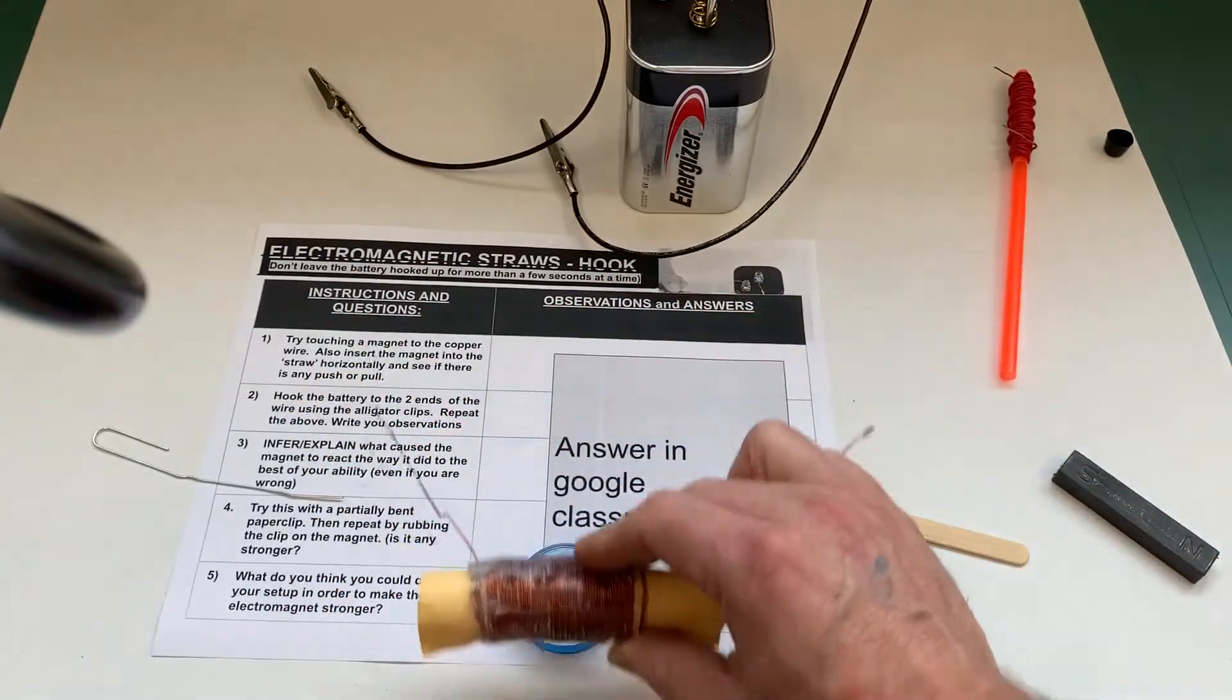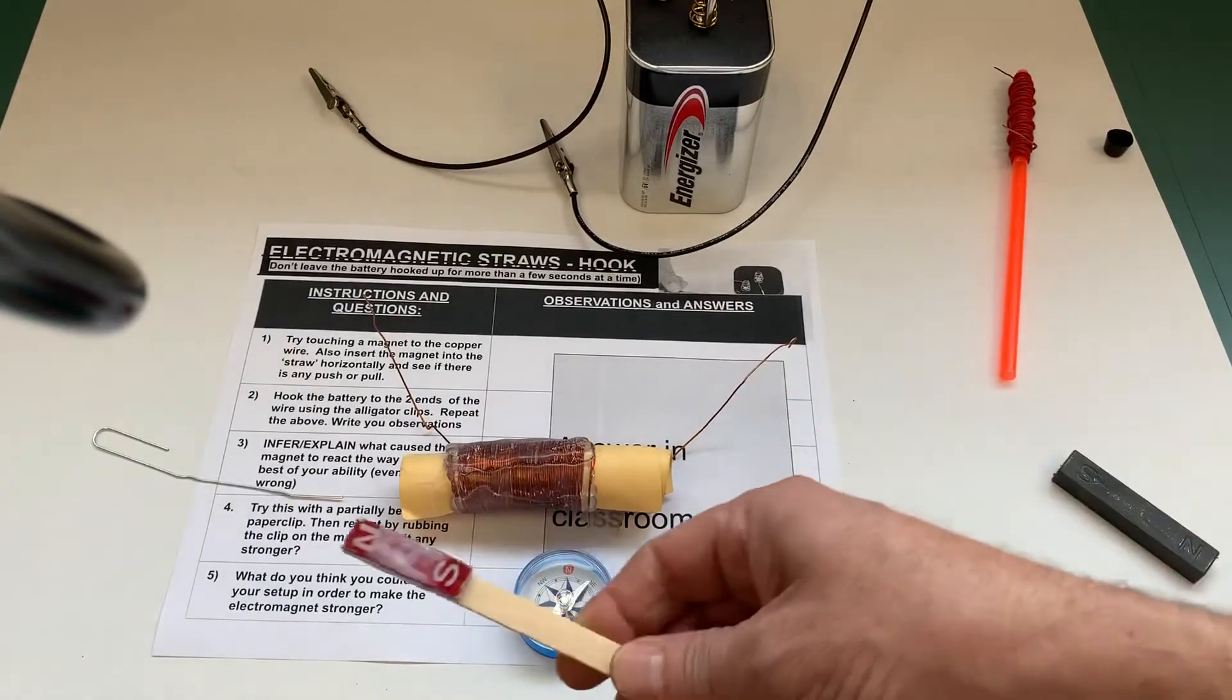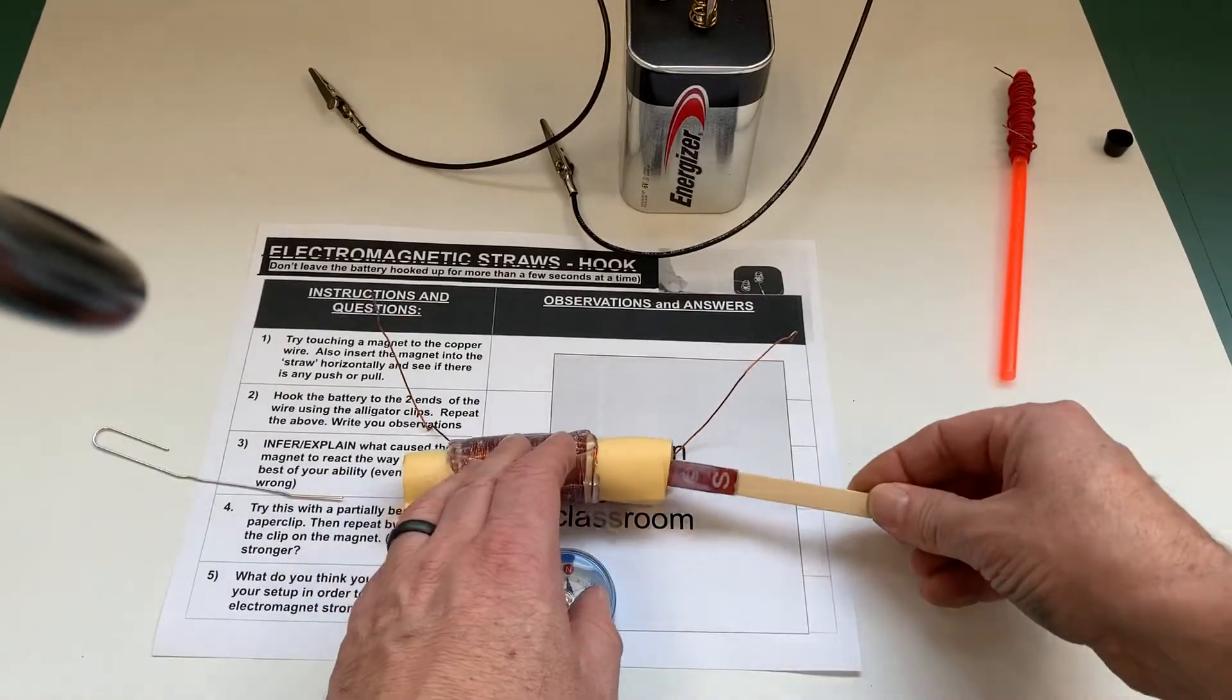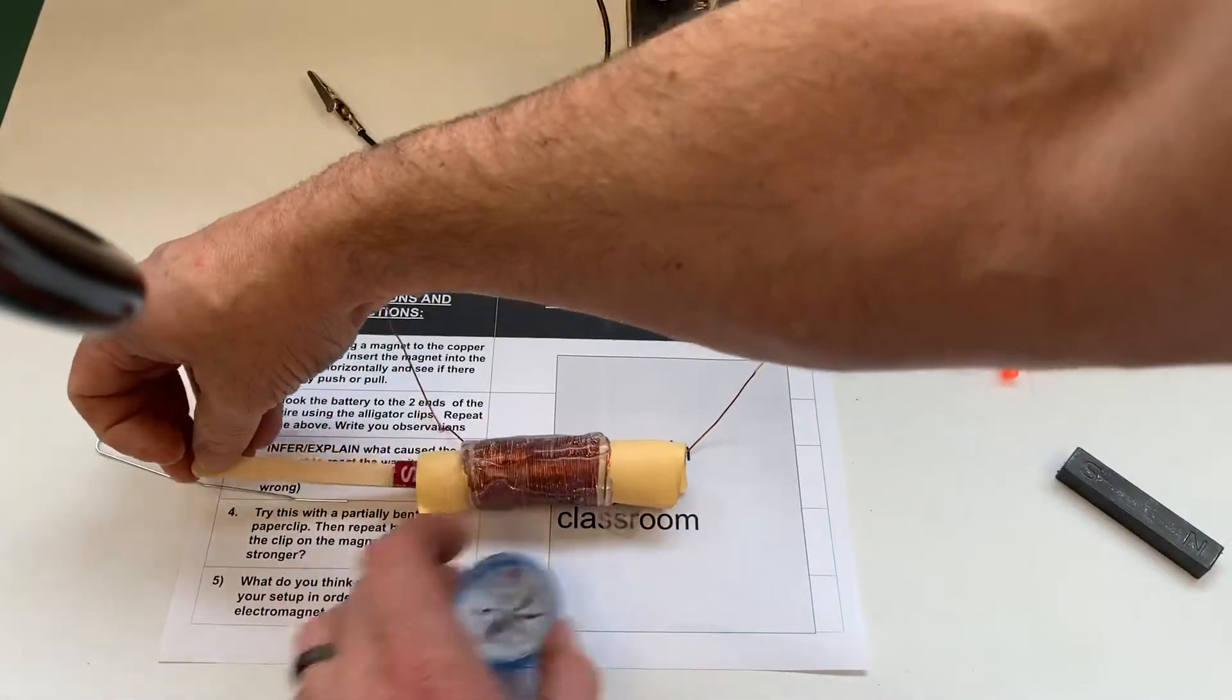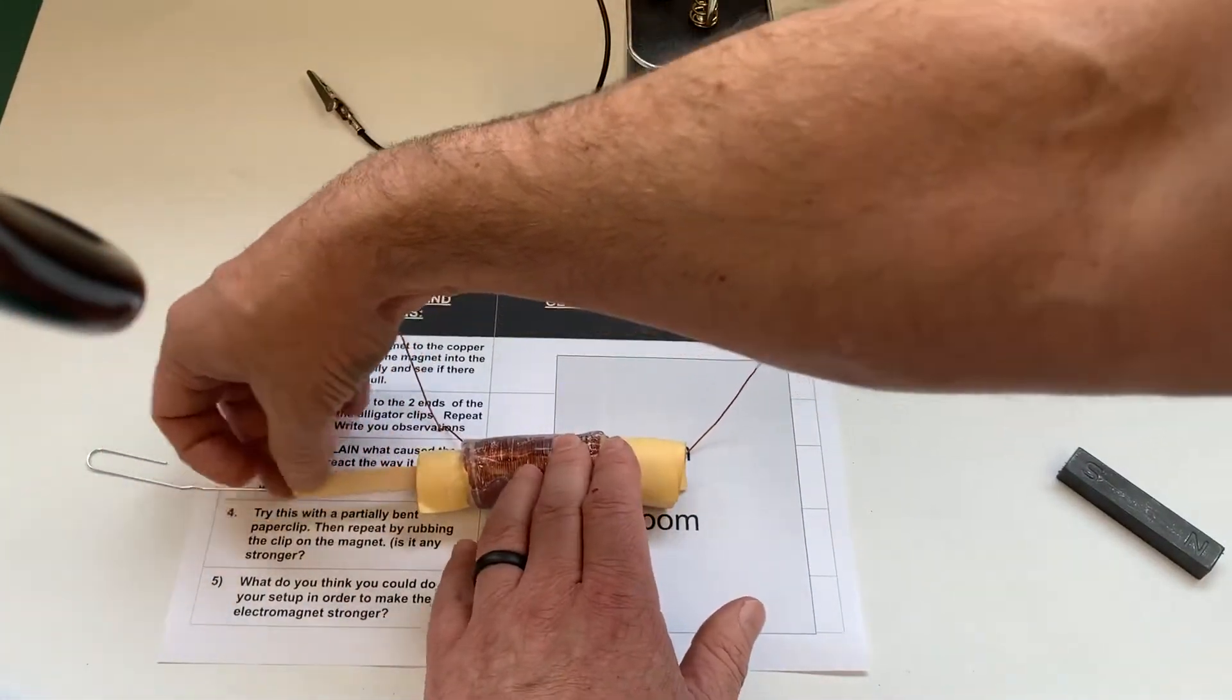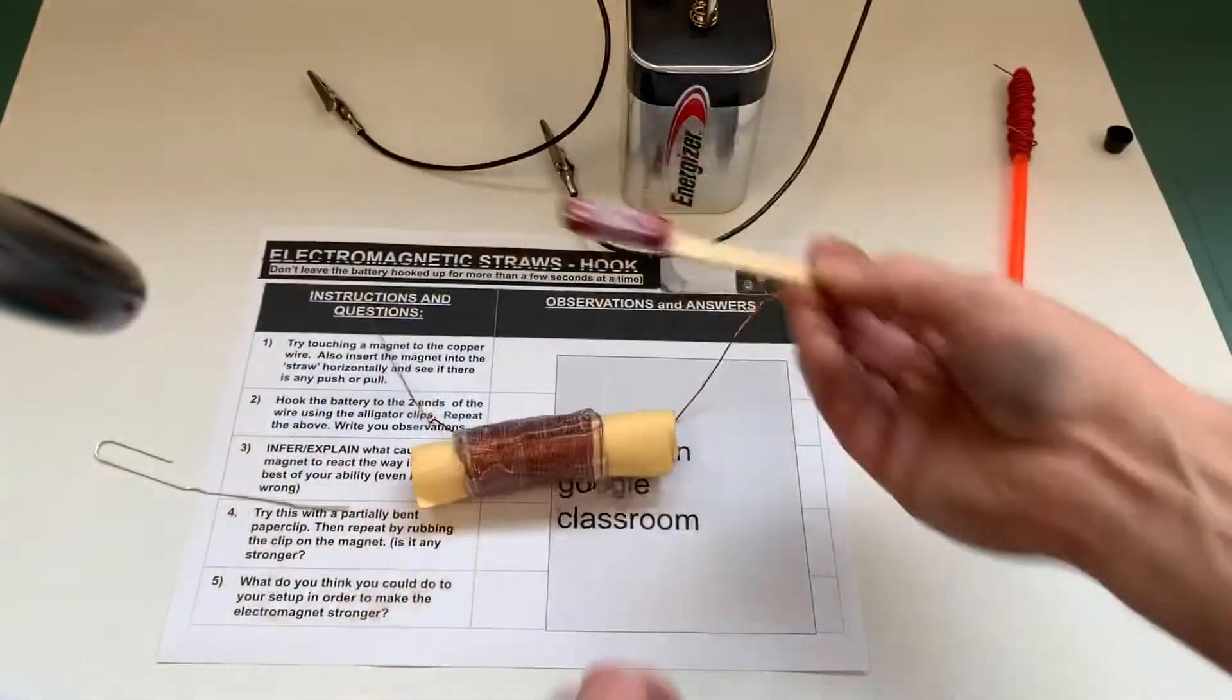First thing you're gonna do is see if this affects a magnet in any way. So you're gonna take a magnet and just put it in here and see if it pushes or pulls the magnet. Move the compass out of the way, pushes or pulls the magnet in at all or is it just acting like there is no magnetic pull.